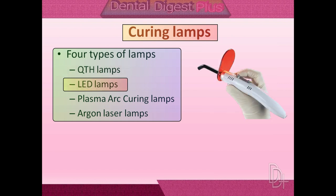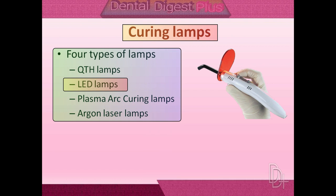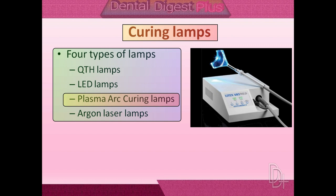Second, LED lamps use a solid-state electronic process to emit radiation only in the blue part of the visible spectrum, between 440 and 480 nanometers, and they do not require filters. LED lights require low voltage, can be battery-powered, and generate no heat, so a cooling fan is not needed. Although they produce the lowest intensity radiation, new technology is rapidly overcoming this limitation. Third, plasma arc curing lamps are high-intensity light curing units that use xenon gas ionized to produce a plasma; the high-intensity light is filtered to remove heat and allow blue light to be emitted. Fourth, argon laser lamps have the highest intensity and emit at a single wavelength; currently available lamps emit at 490 nanometers.